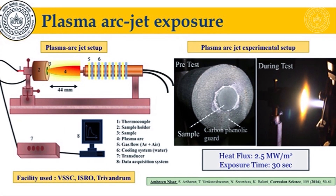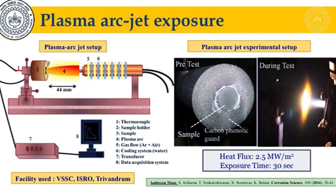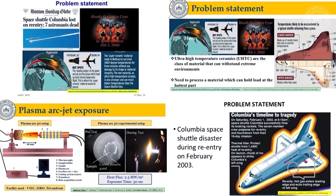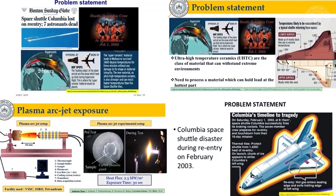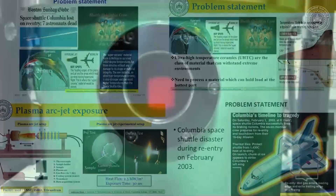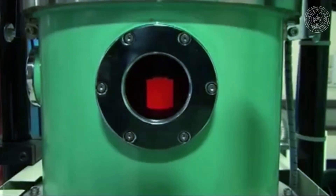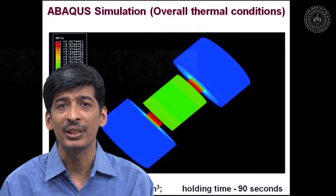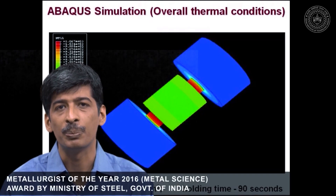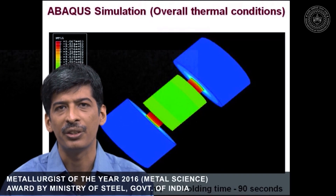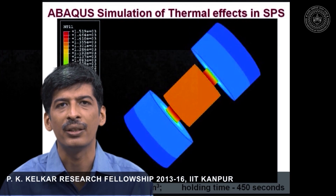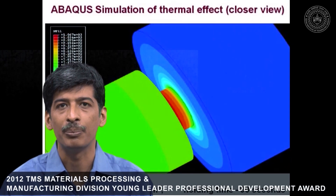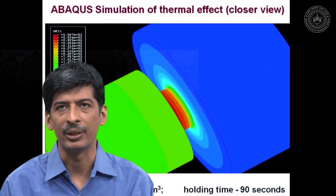Ultra-high temperature ceramics generally include hafnium diboride, zirconium diboride, tantalum carbide, or even carbon-based ceramics. These can be very easily processed using a special technique called spark plasma sintering, which utilizes a very rapid way of sintering these materials much below their melting point.